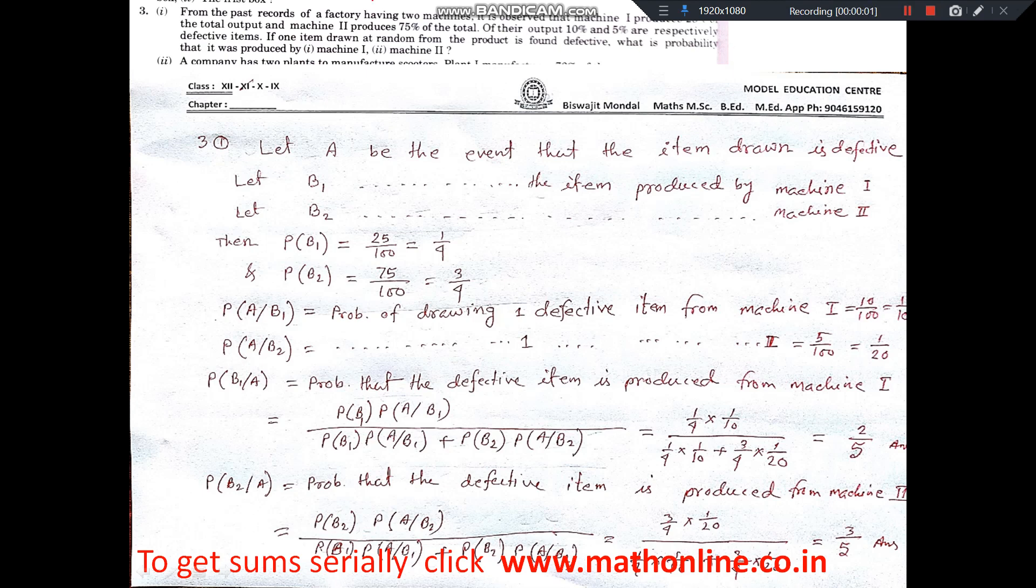From the past record of a factory with two machines, it is observed that machine 1 produced 25% of the total output and machine 2 produced 75% of the total output.